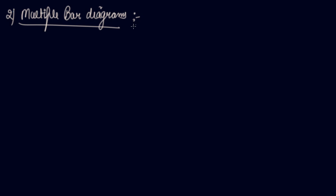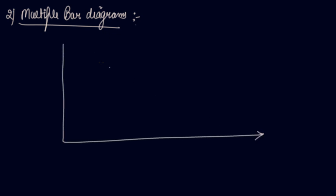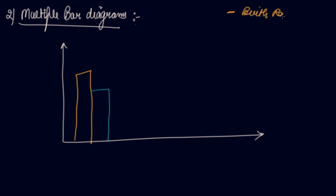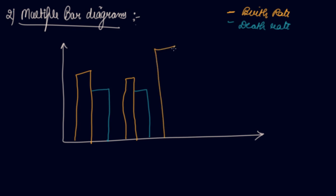Number two is your multiple bar diagram. Multiple bar diagrams are those diagrams which show two or more sets of data simultaneously. These are used to make a comparison between two sets of series. Let's say we take the birth rate and death rate. The yellow color is showing the birth rate and the green color is showing the death rate. So when more than two sets of data are shown simultaneously, it becomes your multiple bar diagram.